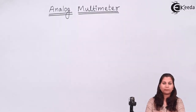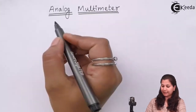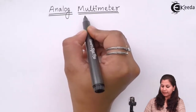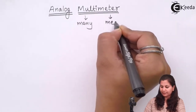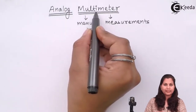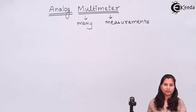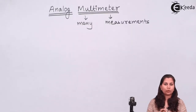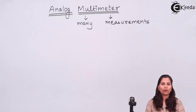Analog multimeter is most commonly used by engineers and technicians in laboratories and for repairing works. As the name suggests, it is a multimeter — 'multi' means many and 'meter' means measurements. So this analog multimeter is an instrument used for making multi-measurements, meaning various types of measurements can be done with a single device. These measurements include voltage, current, and resistance of various ranges.